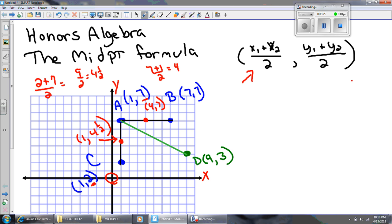Average the x's, average the y's. So my x-coordinates, remember I'm doing AD, the x-coordinates are 1 and 9. So I'm going to go 1 plus 9 and divide by 2.